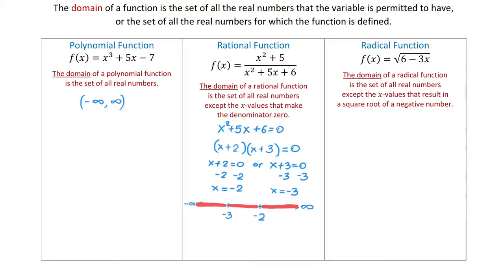Now let's write the interval notation. The first interval goes from negative infinity up to negative 3, with a parenthesis to show negative 3 is not included. The second interval covers the numbers between negative 3 and negative 2, with parentheses showing neither endpoint is included. The third interval is all numbers greater than negative 2, again with a parenthesis. We connect all three intervals using the union symbol.